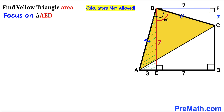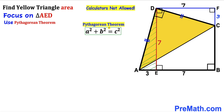Now let's focus on right triangle AED and apply the Pythagorean theorem to calculate the unknown side AD. The Pythagorean theorem states: a² + b² = c². Labeling AD as side c, AE as side a, and DE as side b, we fill in the blanks: a is 3, so we get 3² plus b is 7, so 7² equals c².